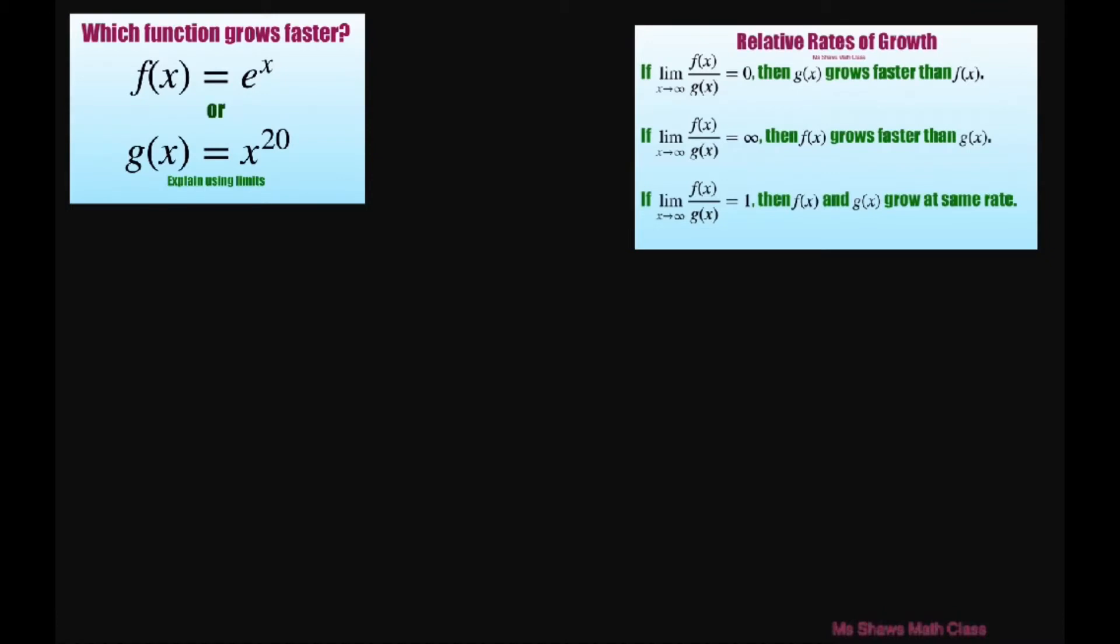We're going to take the limits and see if it satisfies condition 1, 2, or 3. So we'll take the limit as x approaches infinity of f of x divided by g of x. This is going to be e to the power of x divided by x to the power of 20.